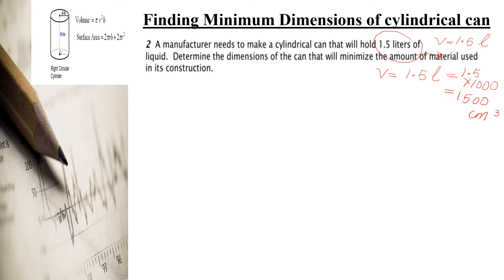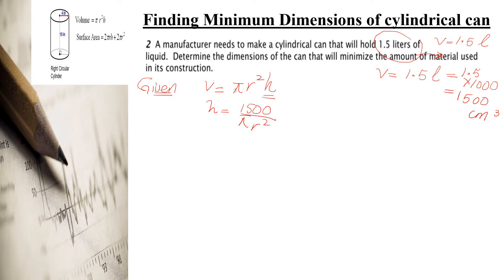The given equation is volume equals πr²h, and the volume is 1500. Find the value of h by dividing both sides by πr². So h equals 1500 divided by πr². This is your height.